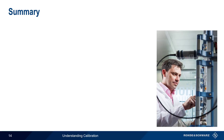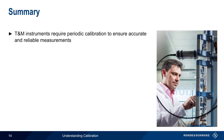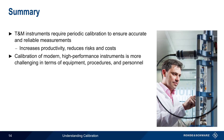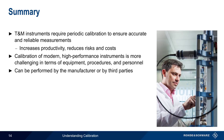Let's end with a brief summary. Test and measurement instruments require periodic calibration to ensure both accurate and reliable measurements. Better measurements increase productivity as well as reduce risks and costs, and this is true in both R&D as well as in manufacturing or production. A quality calibration is particularly important in the case of modern, high-performance instruments, and requires specialized equipment, sophisticated procedures, and highly trained calibration staff. Calibration can be performed either by the original equipment manufacturer or by third-party calibration providers, although third-party calibration may be somewhat lower cost, manufacturer calibration is always superior.